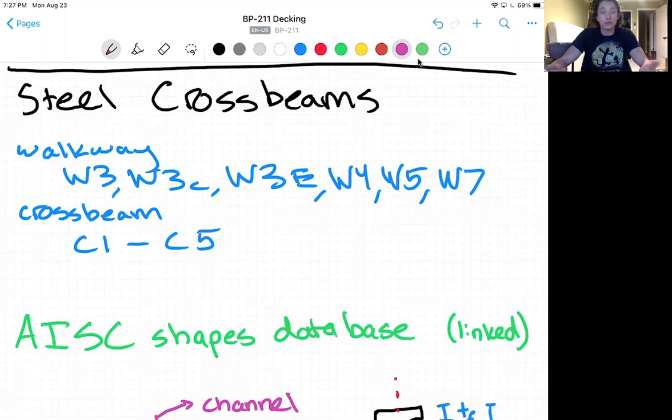Currently we use the steel crossbeams in the walkway details W3, W4, W5, and W7, and there are also crossbeam details C1 through C5.